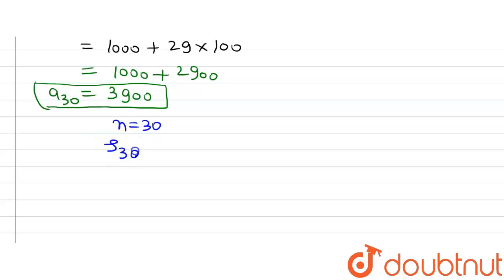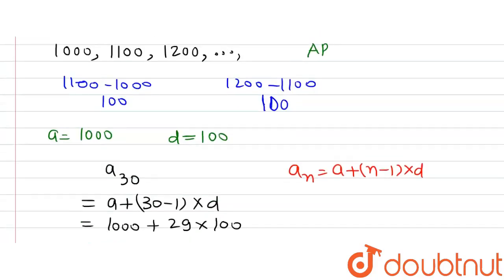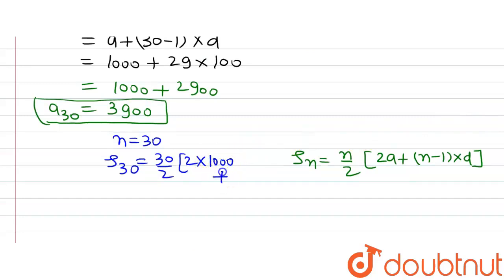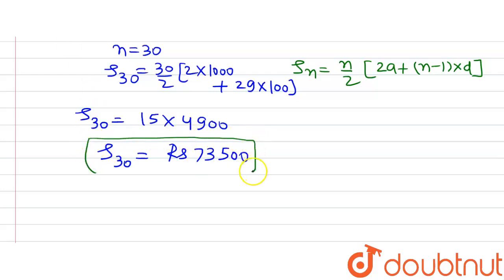Since this is an AP, we use the formula Sₙ = (N/2) × [2A + (N−1) × D]. So S₃₀ = (30/2) × [2(1,000) + (30−1) × 100] = 15 × [2,000 + 2,900] = 15 × 4,900 = Rs. 73,500. So the total amount paid in the first 30 installments is Rs. 73,500.